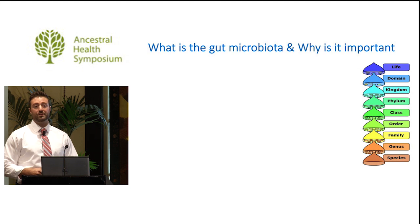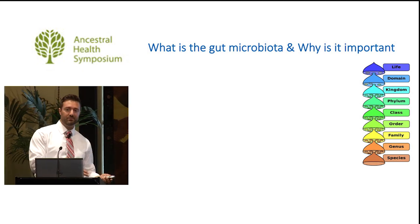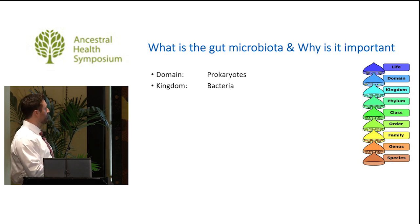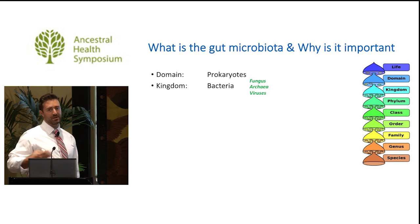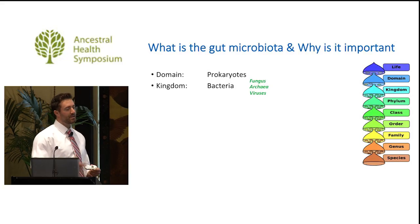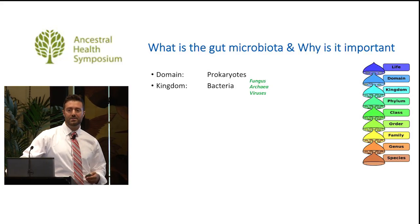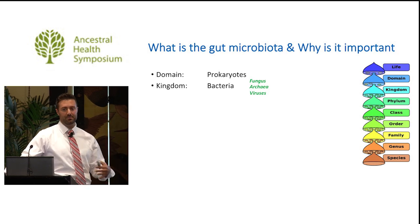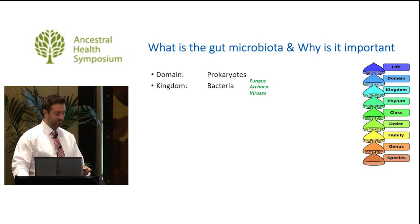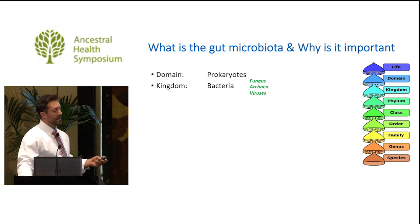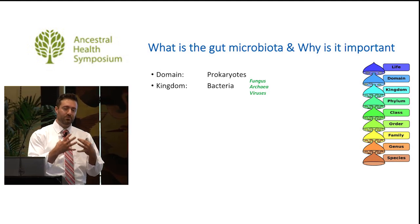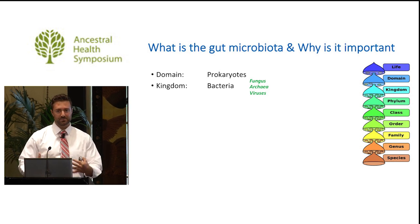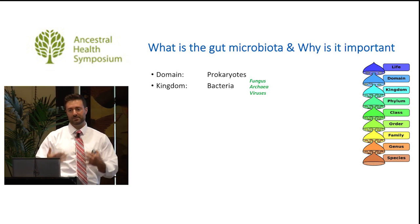When you read the literature it can be confusing—sometimes they talk in phyla, sometimes genus, sometimes species, so here's a quick overview of the nomenclature. The domain is prokaryotes, kingdom bacteria, but there's also some fungus—people have heard of Candida and yeast. There's also archaea; the most well-known is Methanobrevibacter smithii, the organism that can cause constipative small intestinal bacterial overgrowth, secreting methane gas seen on SIBO testing. Interestingly, viruses also play a role—bacteria use viruses to exert antibacterial effects over competitors through phage function, and viruses represent a small but real part of the microbiota.